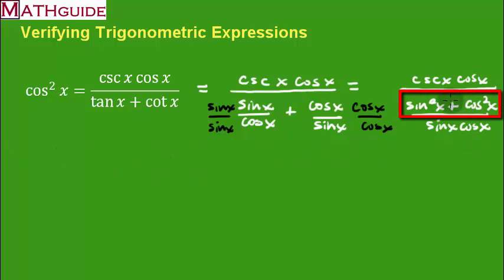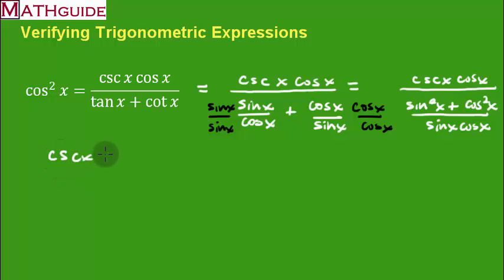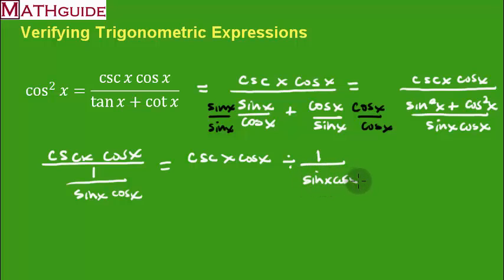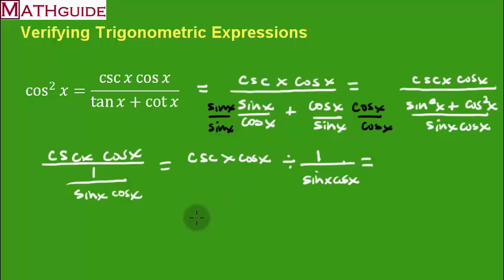The numerator in the denominator of the compound fraction — sine squared plus cosine squared — equals one by the Pythagorean identity. So the compound fraction cleans up further: the numerator is cosecant x times cosine x, and the denominator is one over sine x cosine x. This is a giant division — the major fraction bar of the problem. That means I change this to a multiplication problem by taking the reciprocal of the second fraction.